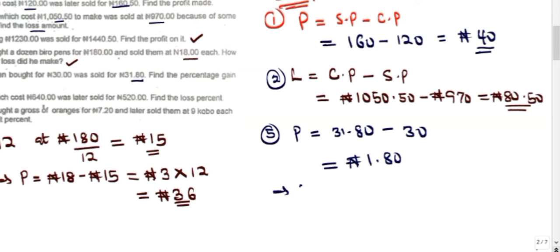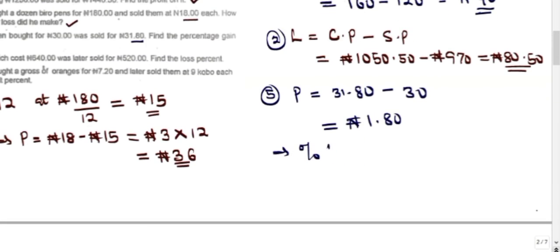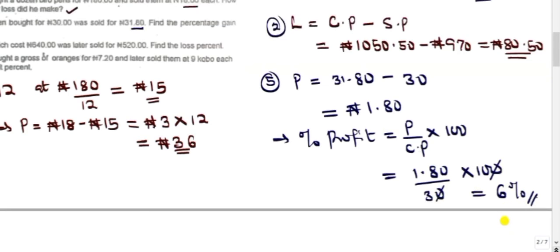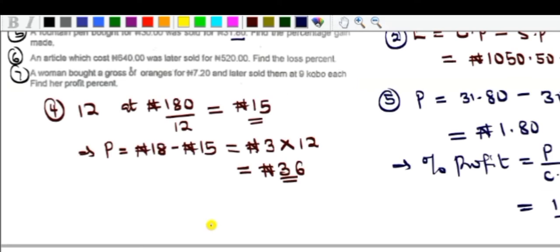Percentage profit = (Profit / CP) × 100 = (1.80 / 30) × 100. Simplifying: 1.80 × 10 / 3 = 18 / 3 = 6. So the percentage profit is 6%. The person made a profit of 6% on this transaction.